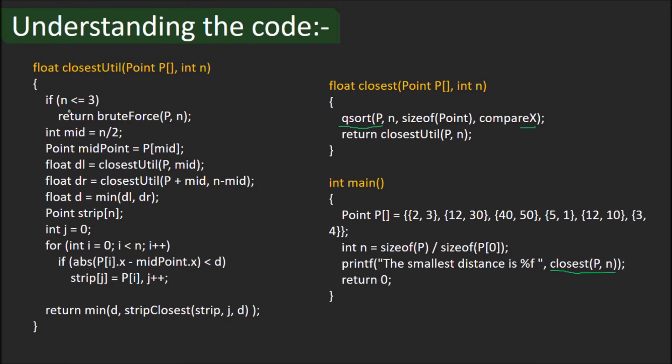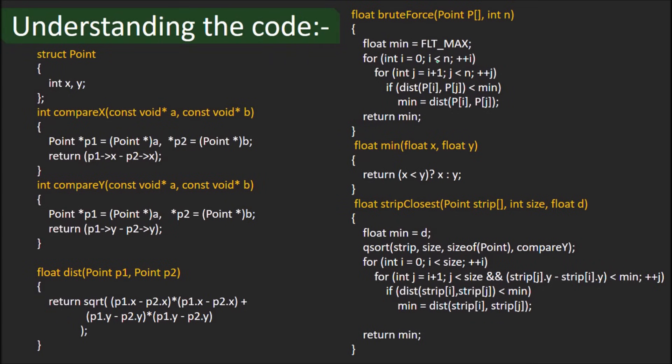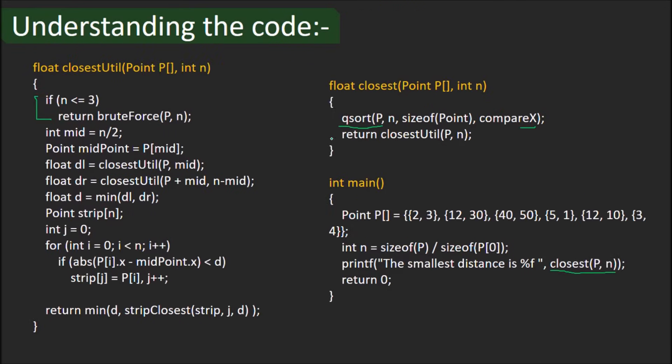ClosestUtil function is now called. If the number of points is less than 4, we simply apply brute force to find the closest pair of points. Let's look at the brute force function on the previous slide. Basically, it's an n-square solution where the distance between every pair of points is calculated and the minimum distance is stored in the variable min. Back to the closestUtil function. Middle point is selected which is basically the one with the middlemost x-coordinate. ClosestUtil function is now recursively called on the left and right half. D stores the lowest of the minimum distances of the two halves.